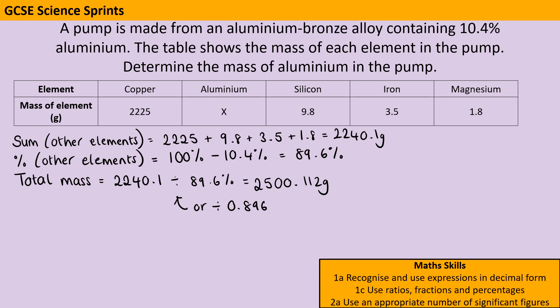So now I know what 100% of the alloy weighs, I want to know how much just my aluminium weighs, so that's the 10.4%. At this point you could multiply by 0.104, or if you prefer you could divide by 100, which would give me 1%, and then multiply that by 10.4.